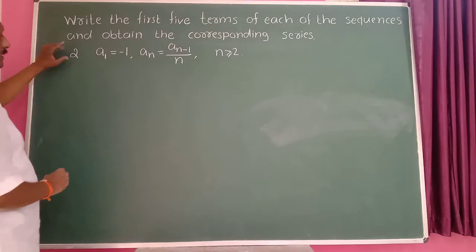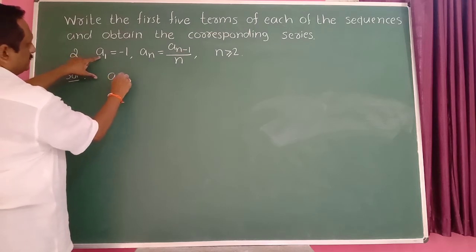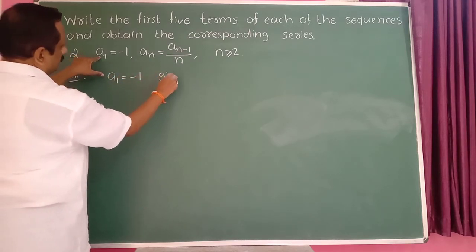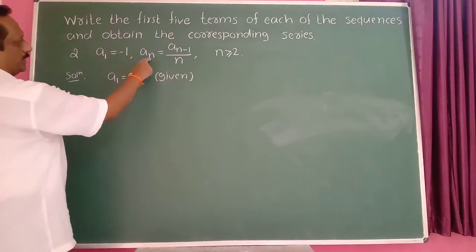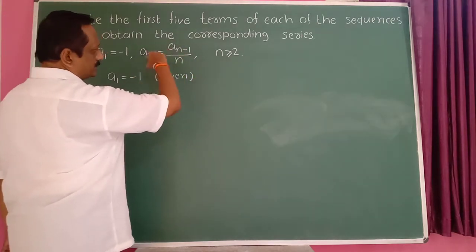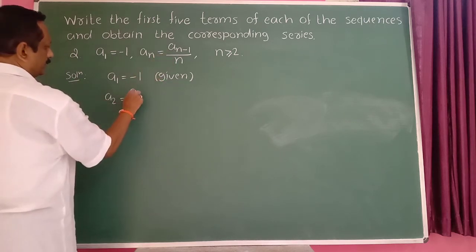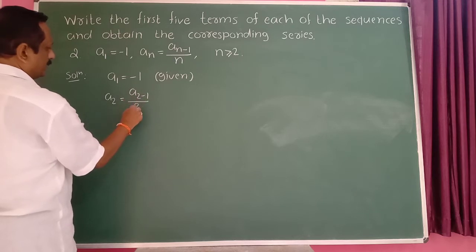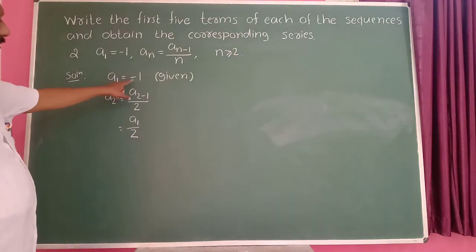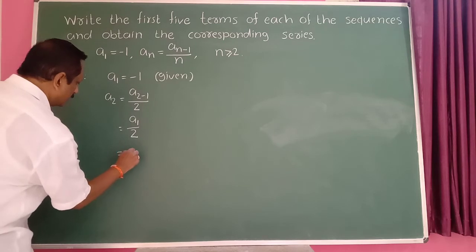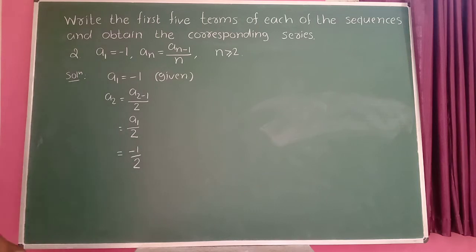In the second example, a_1 is equal to minus 1. Put n equal to 2, since n is greater than or equal to 2. So a_2 is equal to a_(2-1) divided by 2. That is a_1 divided by 2. But a_1 is minus 1. So a_2 is equal to minus 1 divided by 2.